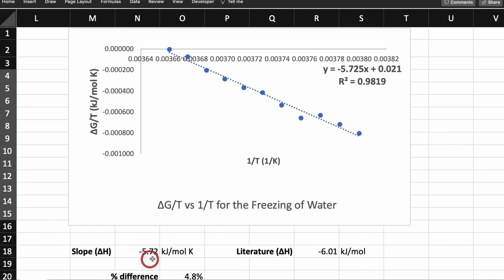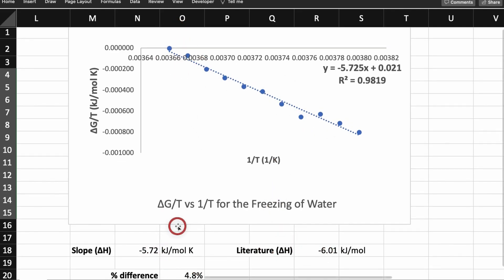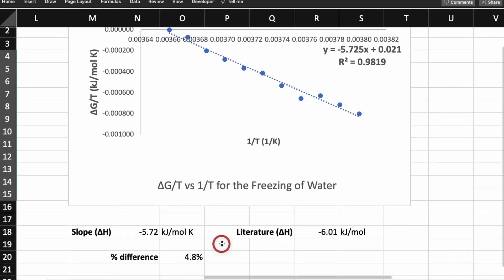How close is this actually? Well, the literature says that the freezing point, enthalpy change for the freezing of water at zero degrees Celsius is negative 6.01 kilojoules per mole. So pretty close. It does change over time, but here it's pretty much straight. So we're a pretty good approximation with a percent difference of 4.8%.